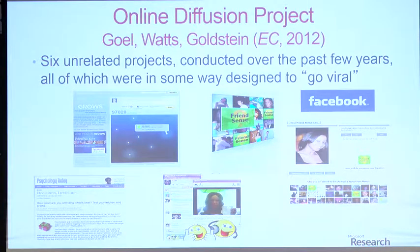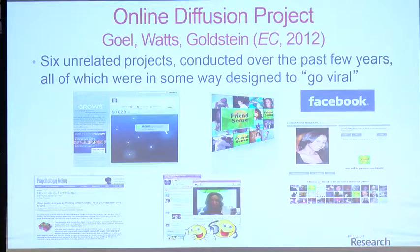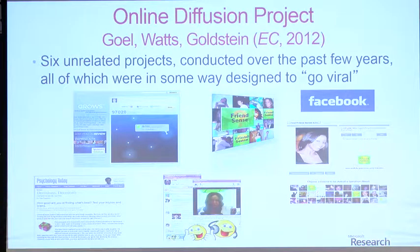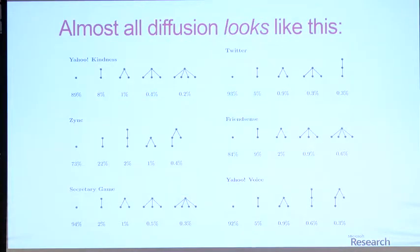The key point is that these data sets were very diverse. Every one of them is biased in particular ways — the network, population, engagement mechanism, and diffusion mechanism were all specific to a particular domain. If you looked at just one, whatever conclusions you reached could be biased by those factors. The claim is that if we see similar patterns across all these domains with very different biases, there's some robustness to those patterns. And in fact we see tremendous consistency across all six domains.